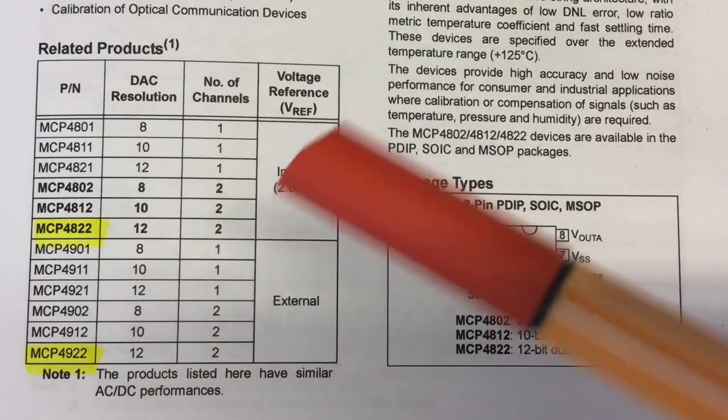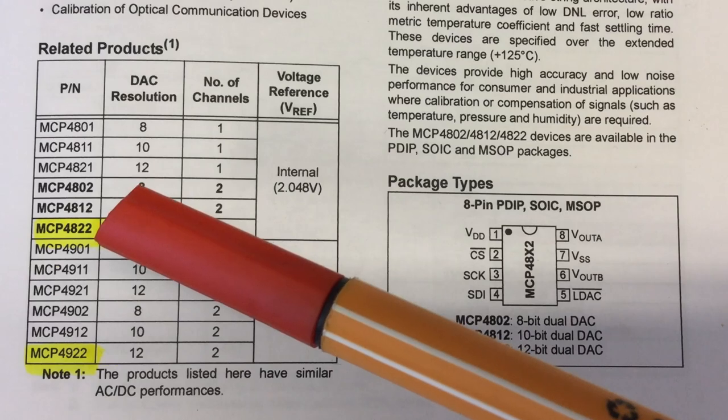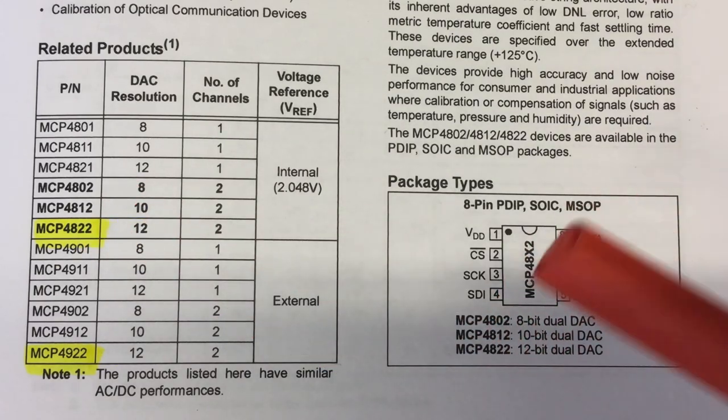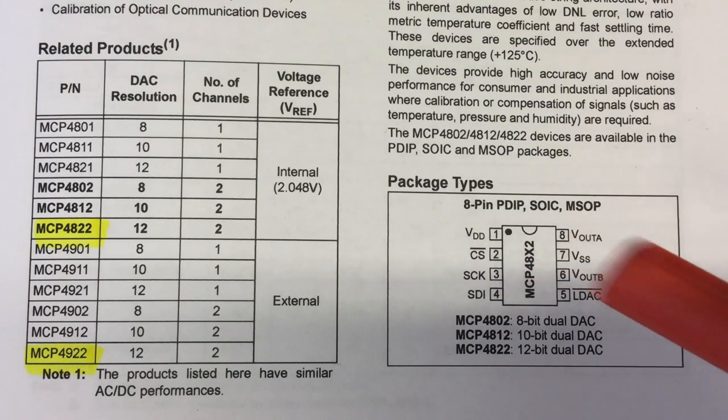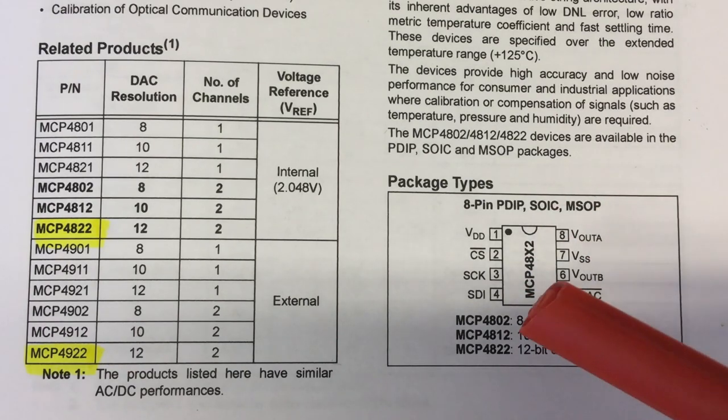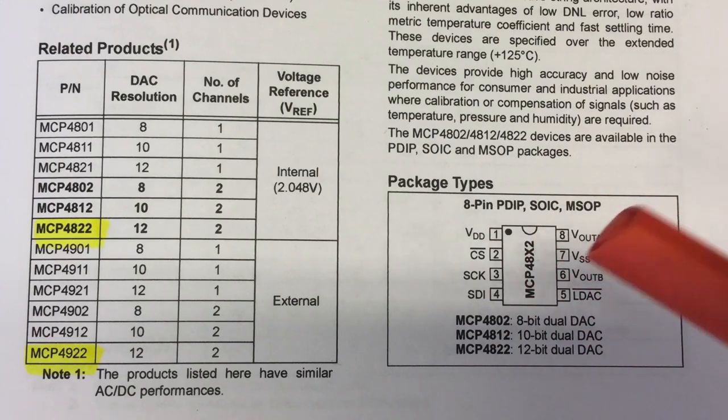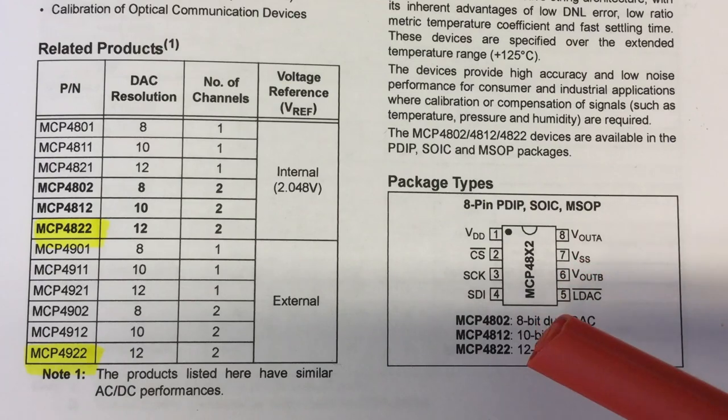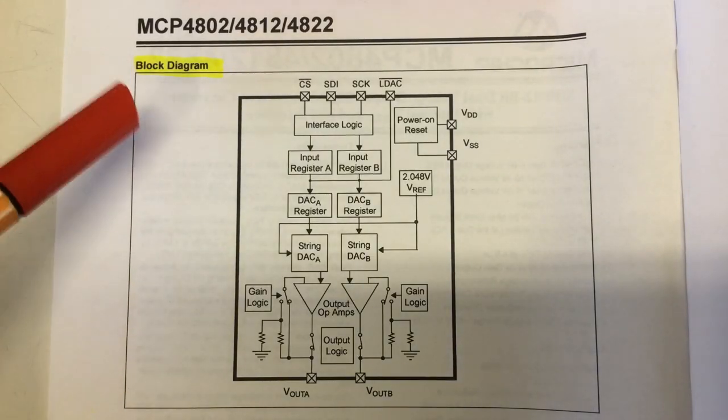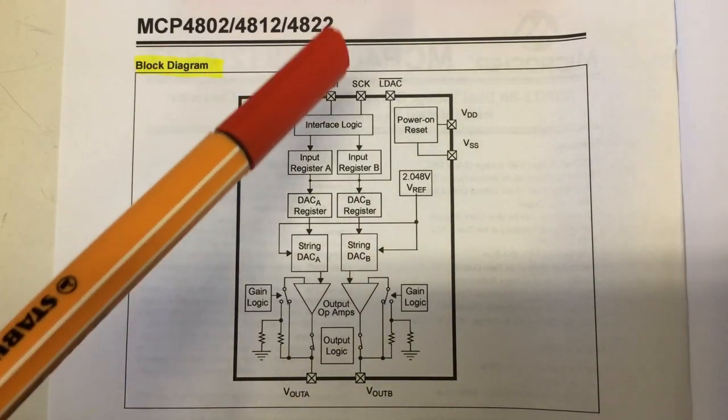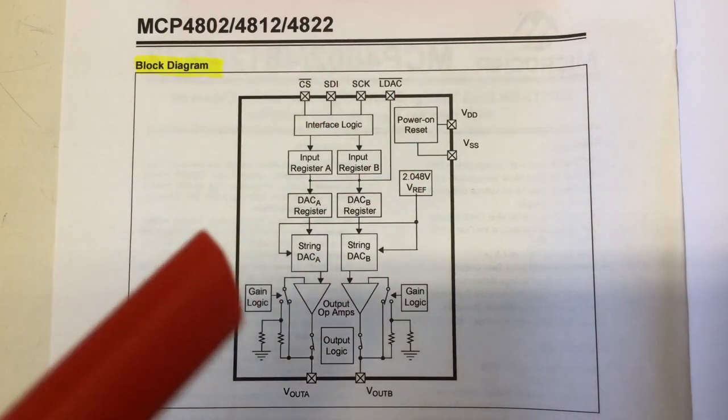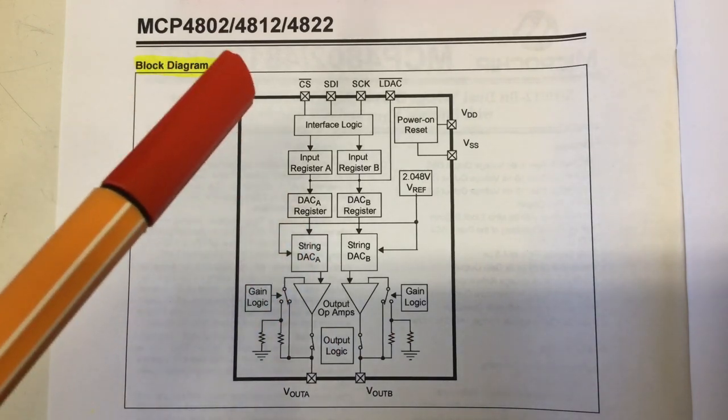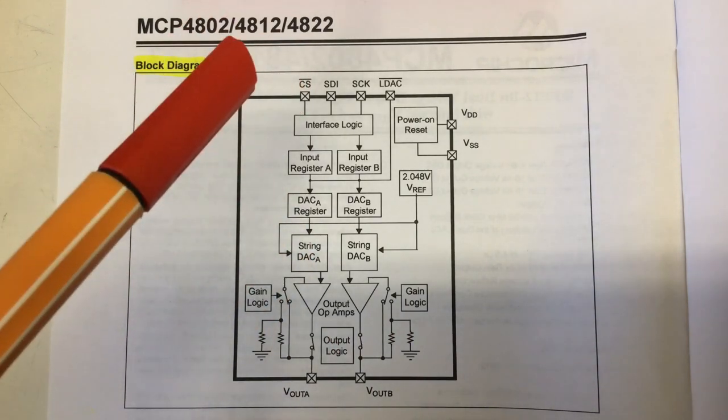But now, let's start with the MCP4822. And here's a little picture of the package. And you see the package is the same for all chips having dual channel independent of the resolution. Let's have a closer look on the MCP4822, which will go onto my breadboard first.